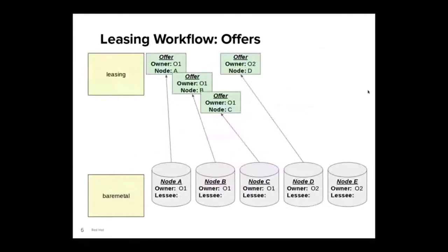Let's dig a little deeper into the hardware leasing system workflows, starting with the creation of offers. Let's say that the bare metal inventory has five nodes A through E, with nodes A, B, and C owned by owner O1, and nodes D and E owned by owner O2. Owner O1 is not using any of their nodes, so they offered them up by creating an offer for each. Owner O2 isn't using node D, so they offered it up as well. However, O2 is using node E, so they keep it for themselves.